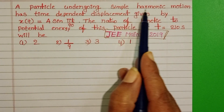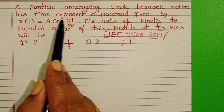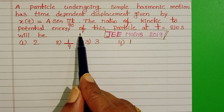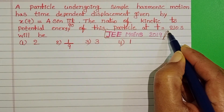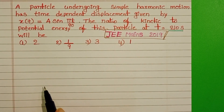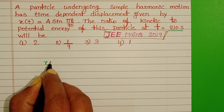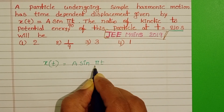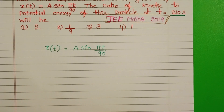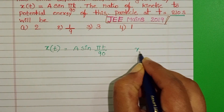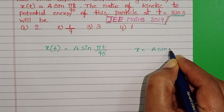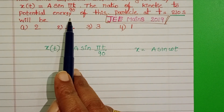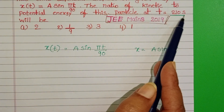A particle undergoing simple harmonic motion has a time-dependent displacement given by this equation. The ratio of kinetic energy to the potential energy of the particle at time t equals 210 seconds will be given. Displacement is a function of time: x = A sin(πt/90). This is the equation of displacement, in the form x = A sin(ωt). Here we have to find out the ratio of kinetic energy to potential energy at a particular time, that is 210 seconds.